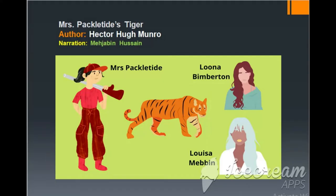We have three characters here: Mrs. Packeltide, Luna Bimberton, and Louisa Mepin. Mrs. Packeltide is a vain, arrogant woman from a wealthy background who was jealous of her social acquaintance, Luna Bimberton. Mrs. Packeltide was ready to do anything to prove that she was far better than Luna. Luna Bimberton was also an envious woman who could not digest any kind of good news related to Mrs. Packeltide. And lastly, Louisa Mepin was a paid secretary of Mrs. Packeltide and was a selfish and greedy woman.